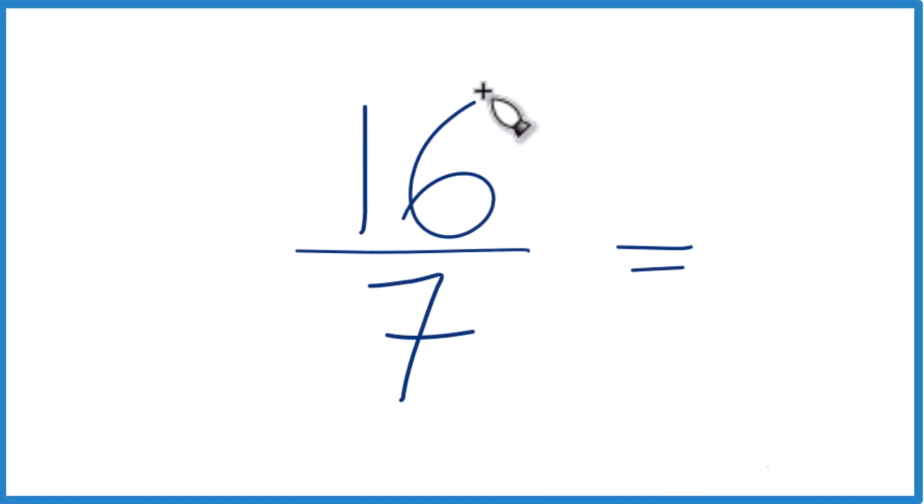So let's write the fraction 16 sevenths as a mixed number. Right now it's an improper fraction. That's because the numerator is larger than the denominator. We can get it to a mixed number.